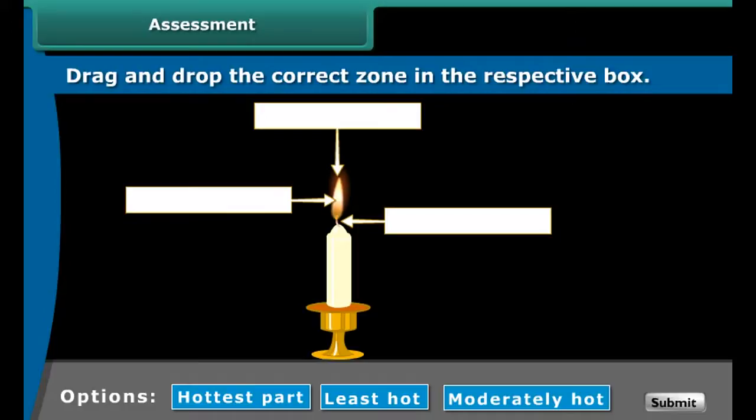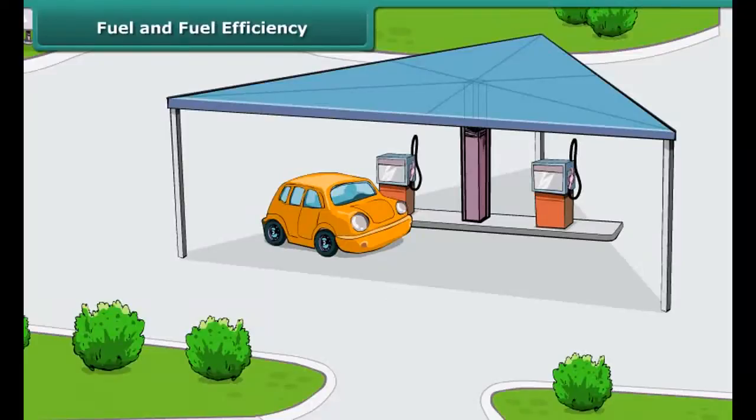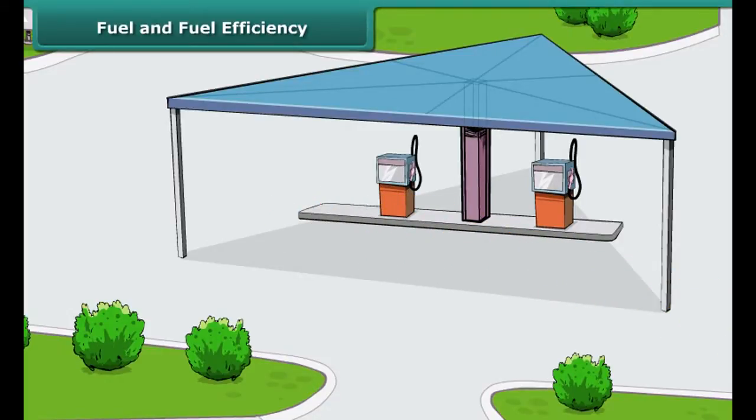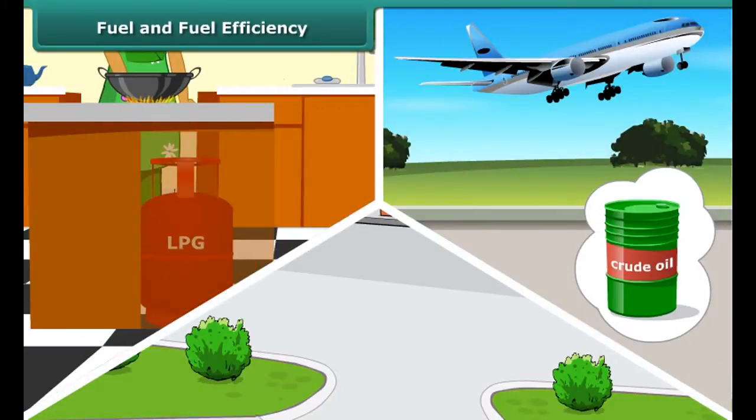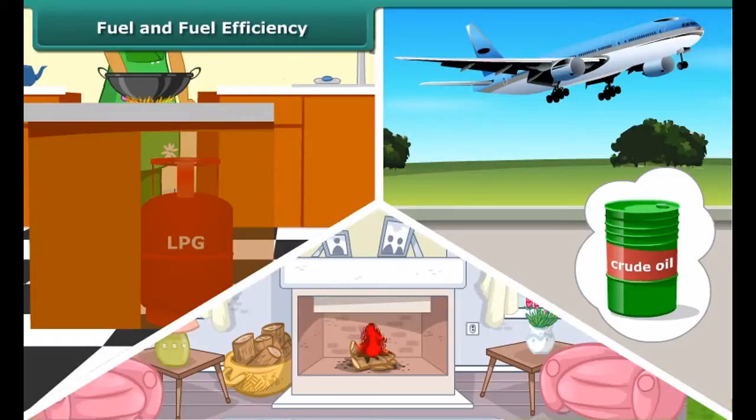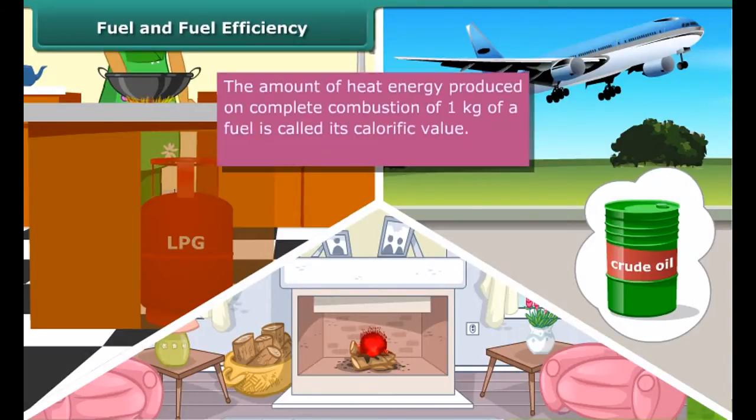All fuels do not burn efficiently. Fuel efficiency is determined by its calorific value. The amount of heat energy produced on complete combustion of 1 kg of a fuel is called its calorific value and it is expressed in a unit called kilojoule per kg. Calorific value of LPG is more than wood or coal. That is why LPG is more efficient fuel than wood or coal.